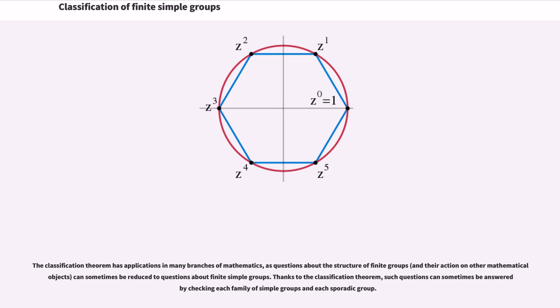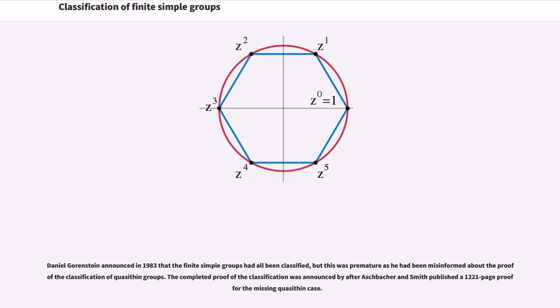Daniel Gorenstein announced in 1983 that the finite simple groups had all been classified, but this was premature as he had been misinformed about the proof of the classification of quasithin groups. The completed proof of the classification was announced by Aschbacher and Smith published a 1,221-page proof for the missing quasithin case.